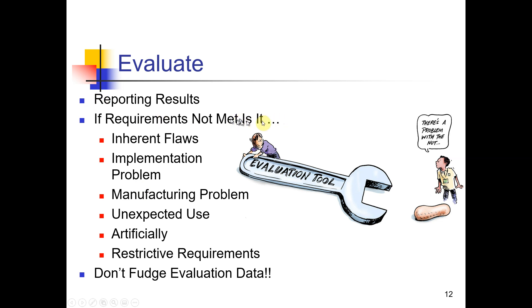Report the results. If the requirements are not met, is it a flaw, an inherent flaw, an implementation problem, manufacturing, unexpected use, artificial restrictive requirements? Like a soda cup at a restaurant, a soda machine. If it's designed to fill up a cup in 10 seconds, what if it's 10.1? Do you really care? Is it artificially restrictive? If it takes 10.1, it takes 10.1. It's still a very useful product. No fudging.